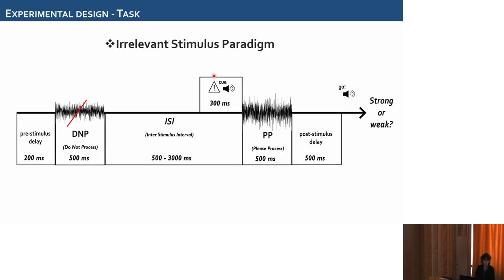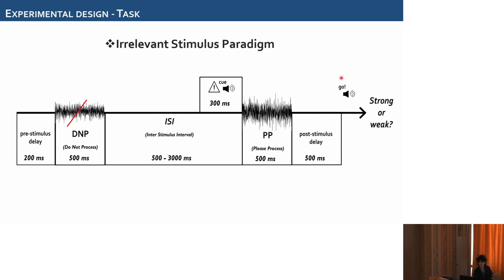Concerning the task, we developed the relevant stimulus paradigm. We have a press stimulus delay, followed by the onset of the Do Not Process stimulus (DNP), which is the irrelevant one, followed by an inter-stimulus interval ranging from 500 to 3,000 milliseconds. Overlapping, we have an acoustic cue that signals the onset of the Please Process (PP) stimulus, which is the relevant one. We have a post-stimulus delay and a go cue is played. At this point, the rat must decide whether the PP stimulus was strong or weak according to a reference value it has internalized through training. On some trials, we only have the PP stimulus alone as a control.